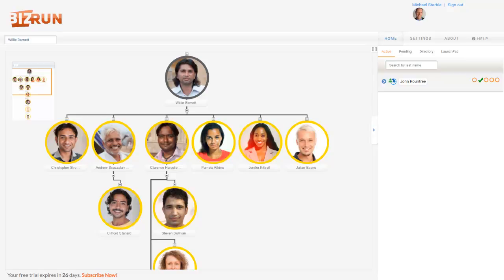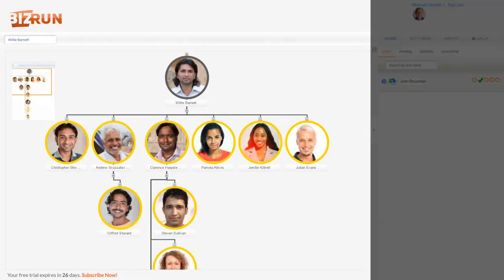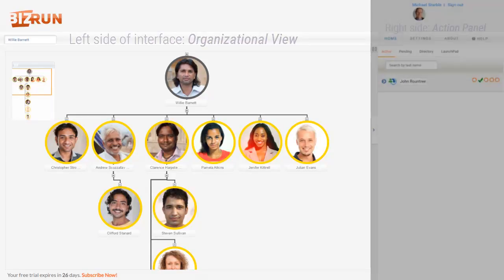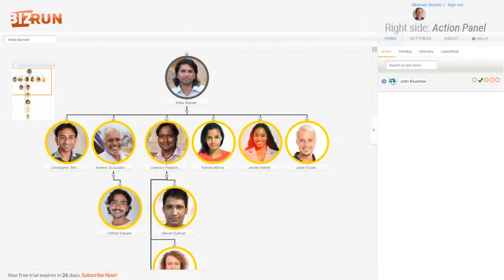In part one of the series, we mentioned that the BizRun interface is made up of two main areas. In that video, you met the area on the left side of the interface — the organizational view. We refer to the area on the right side of the interface as the action panel.